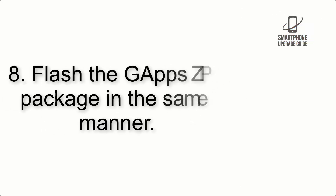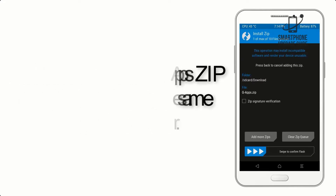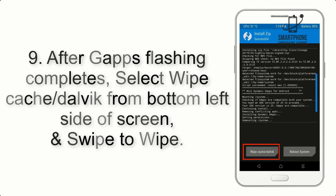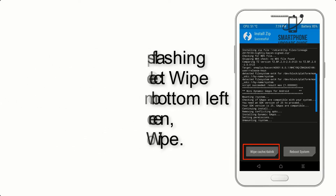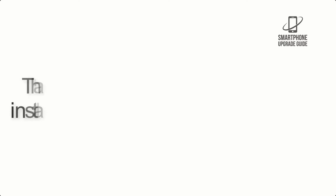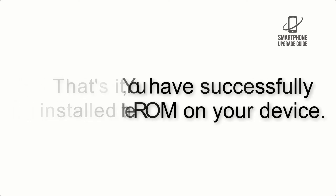Step 8: Flash the GApps zip package in the same manner. Step 9: After GApps flashing completes, select Wipe Cache and Dalvik from the bottom left side of the screen and swipe to wipe. Step 10: When the flashing process is complete, hit Reboot System. That's it — you have successfully installed the ROM on your device.